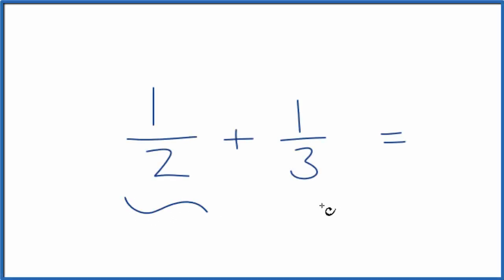Let's add the fractions one-half plus one-third. And when we're done, I'll show you an easy way to check your work. So first off, we need to get the same denominator. That's the number on the bottom. Right now, they're different.